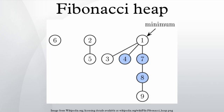Operation decrease key will take the node, decrease the key and if the heap property becomes violated, the node is cut from its parent. If the parent is not a root, it is marked. If it has been marked already, it is cut as well and its parent is marked. We continue upwards until we reach either the root or an unmarked node. Now we set the minimum pointer to the decreased value if it is the new minimum.